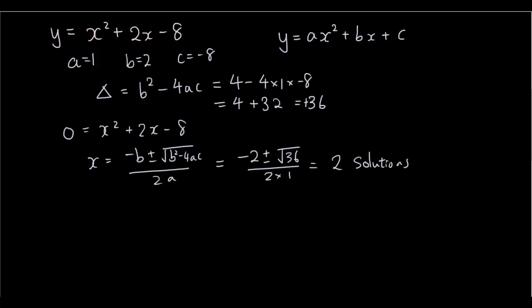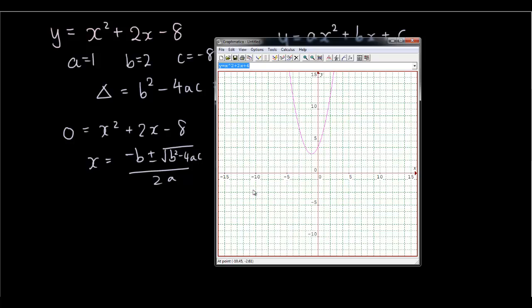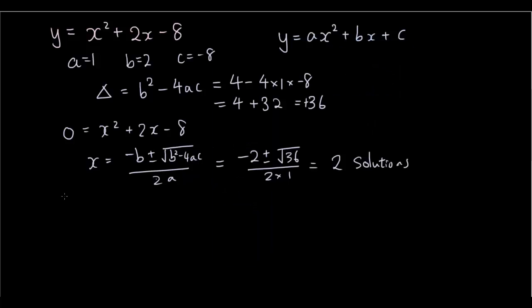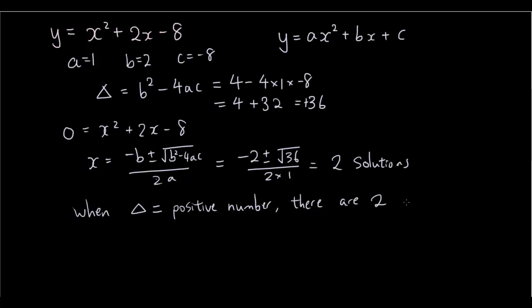If we show this in Graphmatica — y equals x squared plus 2x minus 8 — you can see that there are two x-intercepts. So the summary point is that when the discriminant is equal to a positive number, there are two roots, or two x-intercepts.